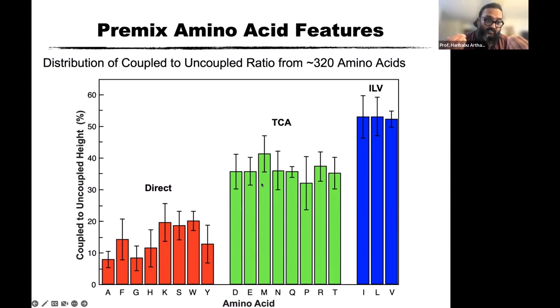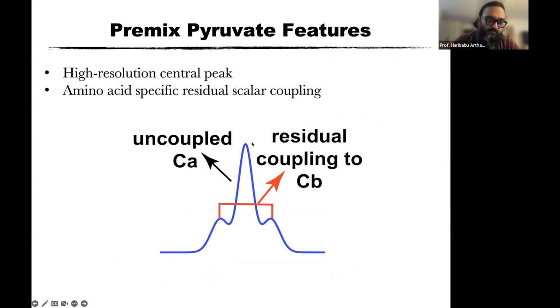Taking the ratio for each amino acid, things that go through the direct process — alanine, phenylalanine, glycine — have a larger uncoupled-to-coupled ratio, meaning the central peak is taller. With the TCA cycle, things get more complex with more prominent shoulders. For the condensation process — ILV — it's even higher. Importantly, at any point the coupled-to-uncoupled ratio is less than 50%, meaning the central peak is always at least twice as high as the surrounding shoulders.